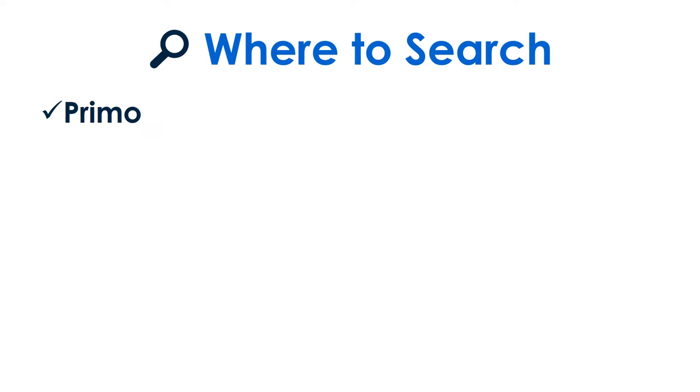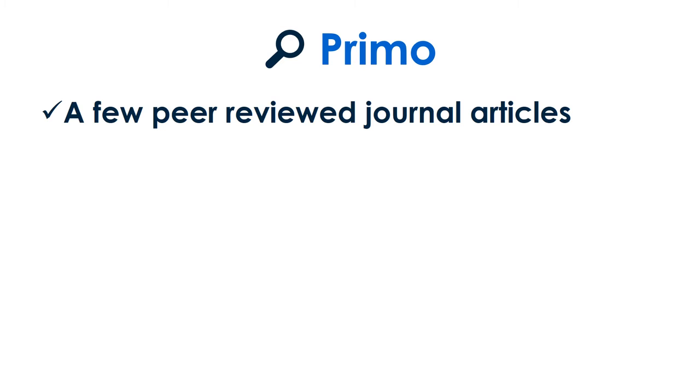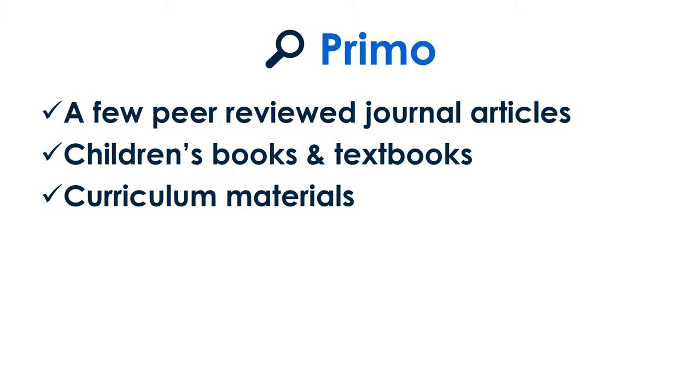Let's start with where to search. We'll cover three options: Primo, library databases, and websites. Primo is the library search tool and catalog. Choose Primo when you only need a few journal articles, need children's books or classroom textbooks, or are looking for curriculum materials or need a specific journal title.